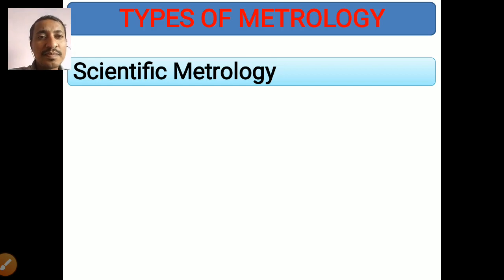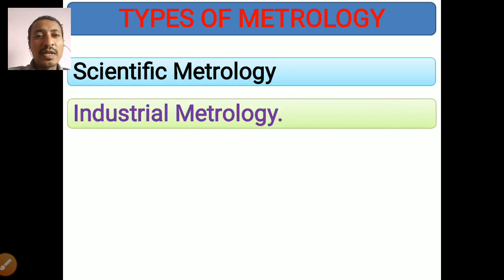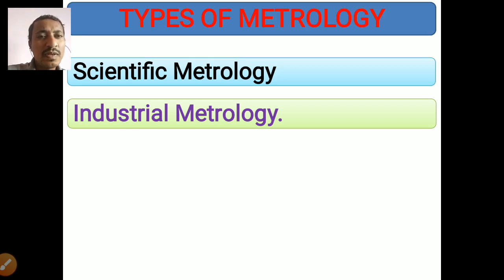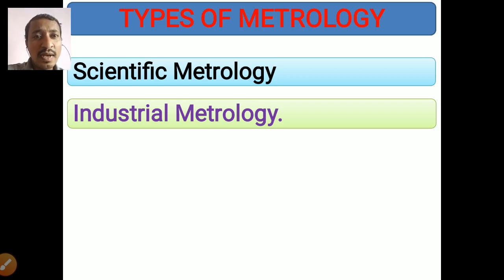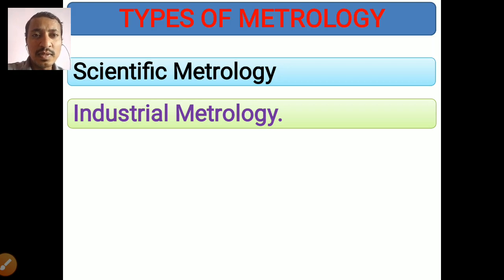Industrial metrology involves the measurements done in industries and the calibration of measuring instruments. Every industry has its own quality control laboratories where they inspect different parts or products they manufacture. They also perform calibration of measuring instruments — calibration means checking for the presence of any errors in the measuring instruments. We will study calibration in detail later.